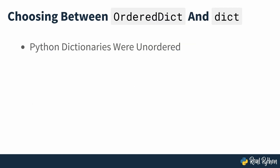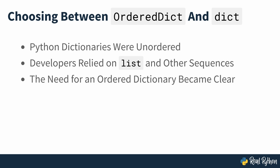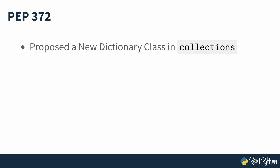For years Python dictionaries were unordered data structures. Python developers were used to this fact and they relied on lists or other sequences when they needed to keep their data in order. With time developers found a need for a new type of dictionary, one that would keep the items ordered. Back in 2008, PEP372 introduced the idea of adding a new dictionary class to collections. Its main goal was to remember the order of items as defined by the order in which the keys were inserted. That was the origin of OrderDict.